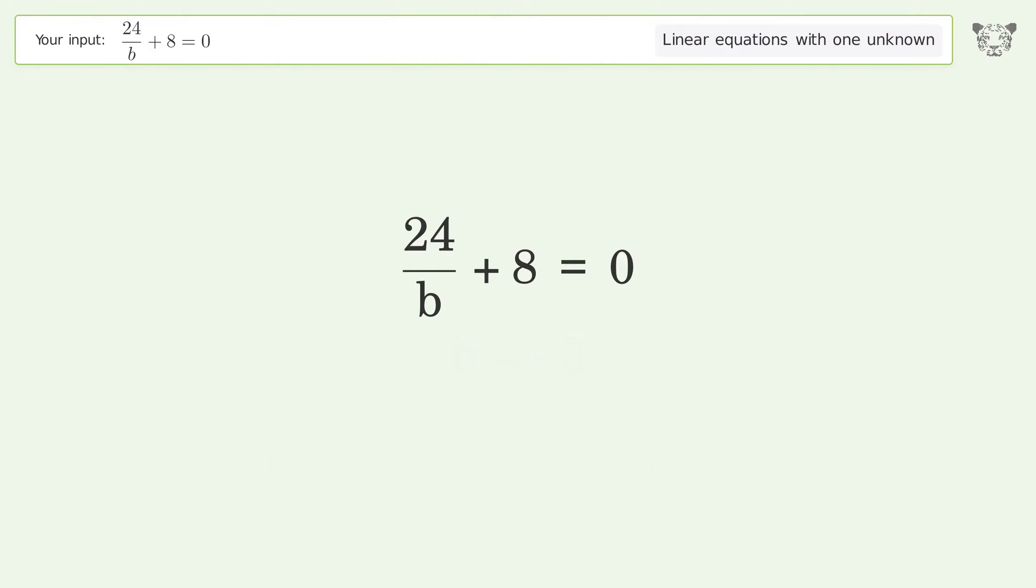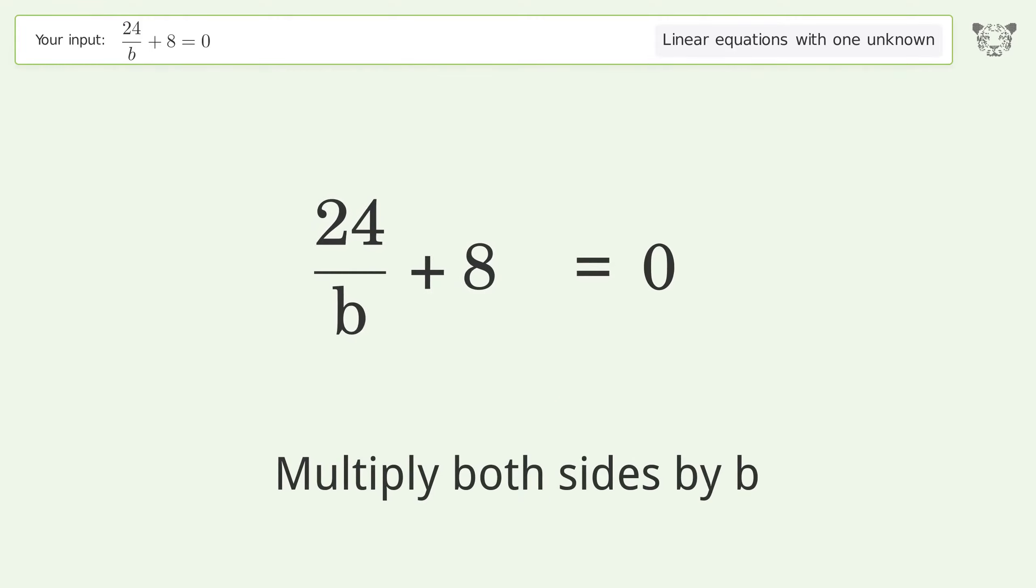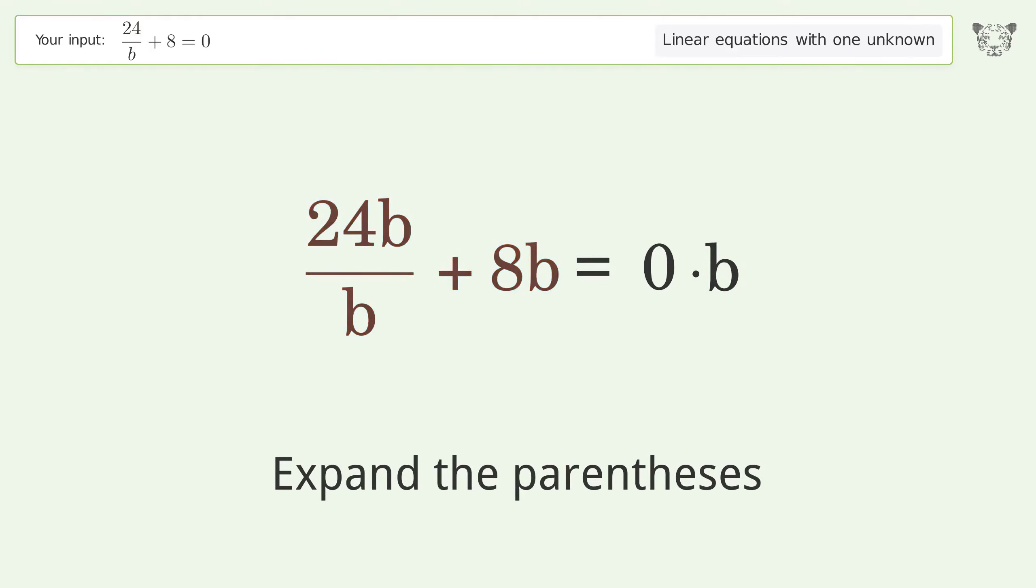Let's solve it step by step. Isolate the b. Multiply both sides by b. Expand the parentheses. Simplify the arithmetic.